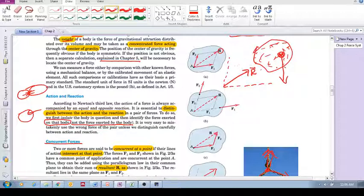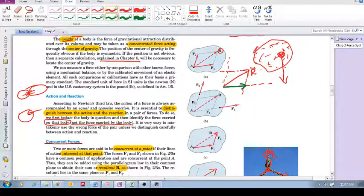All we do is from the head of that vector sum parallel to the one axis until it cuts the other one, then that would be F1. And from the head parallel to that axis until it cuts that one, that would be F2.